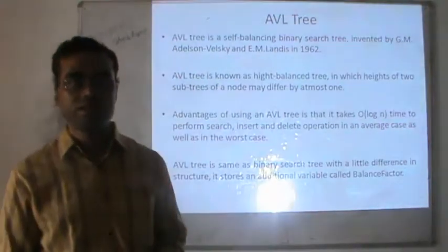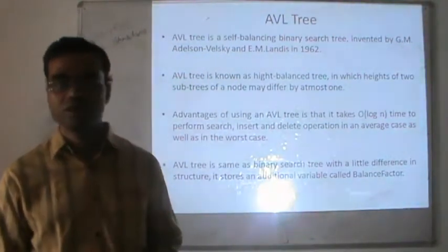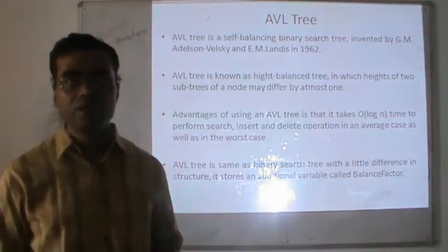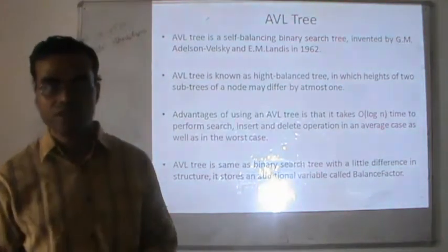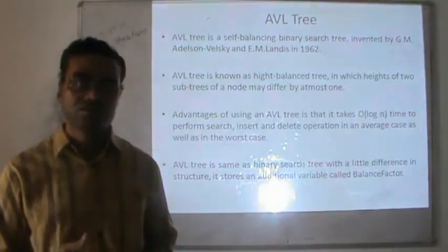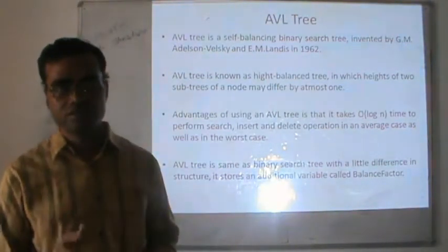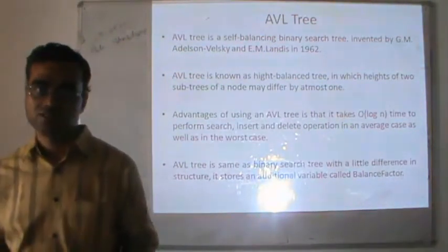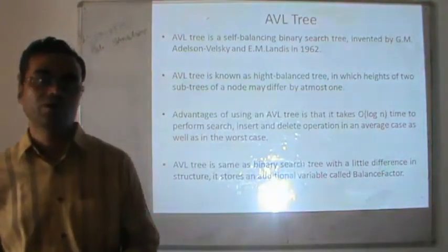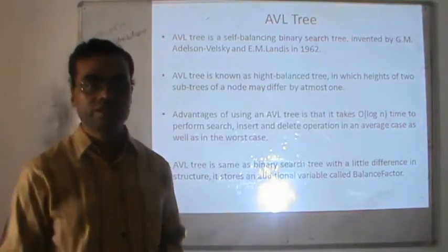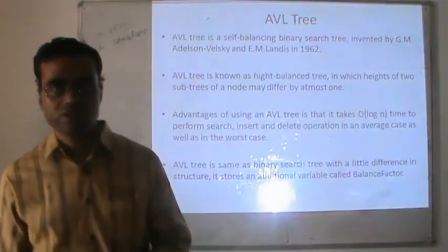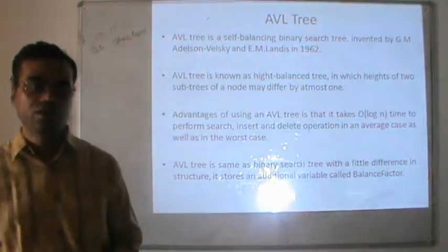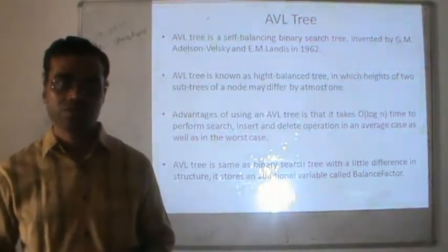In the binary search tree, insertion, deletion, and searching take O(log n) time. But for a left-skewed tree or right-skewed tree, searching, insertion, and deletion take O(n) time — that is the worst case of the binary search tree. In the AVL tree, both the average case and worst case time complexity remain O(log n), which is why AVL tree is the better way to represent data.